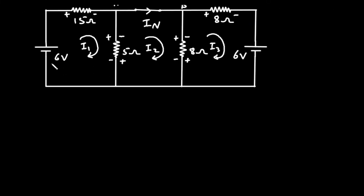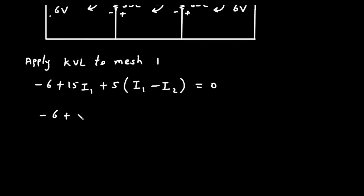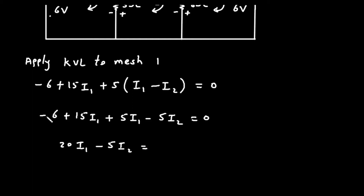Applying KVL to mesh 1, starting from the source terminal: −6 + 15·I1 + 5·(I1 − I2) = 0. Simplifying: −6 + 15·I1 + 5·I1 − 5·I2 = 0, which gives 20·I1 − 5·I2 = 6. This is equation 1.